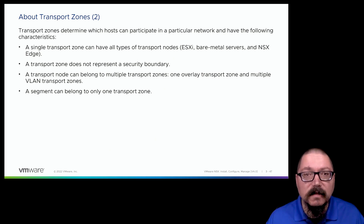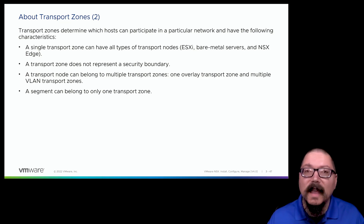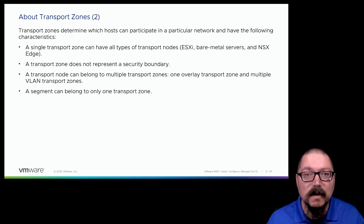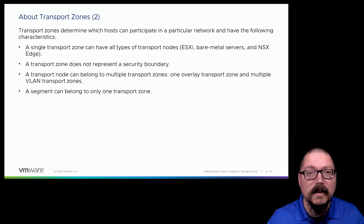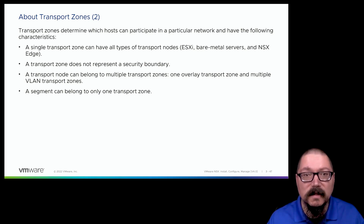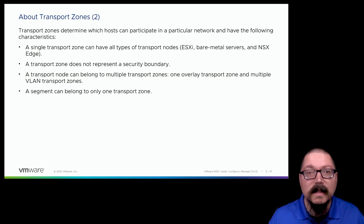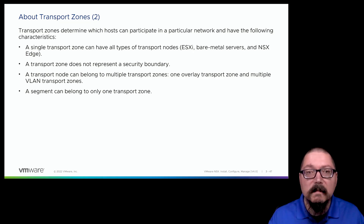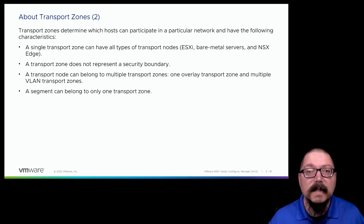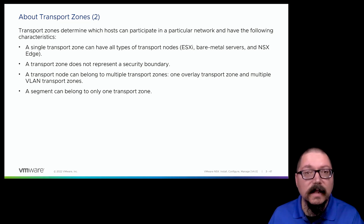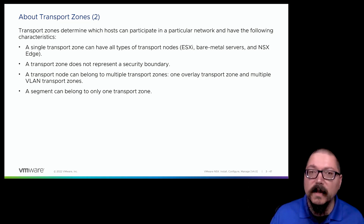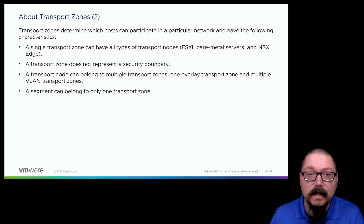I'll have at least one overlay transport zone and at least one VLAN transport zone, because the transport zone also defines the type of traffic a segment will carry. When I create a segment and attach it to an overlay transport zone, it becomes a logical switch using the Geneve overlay protocol to send traffic between hypervisors. If I associate a segment with a VLAN transport zone, it's like creating a VLAN-backed port group on a distributed switch — traffic is tagged with a VLAN ID.